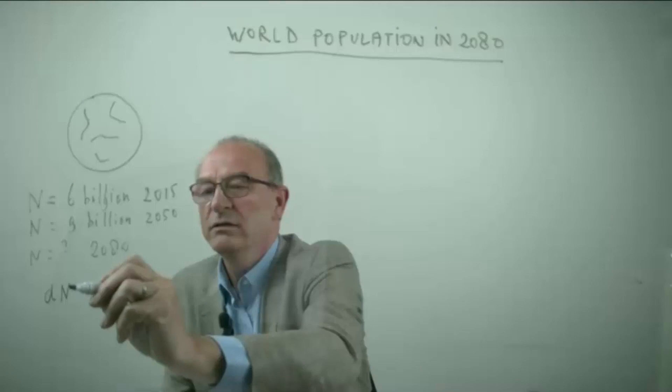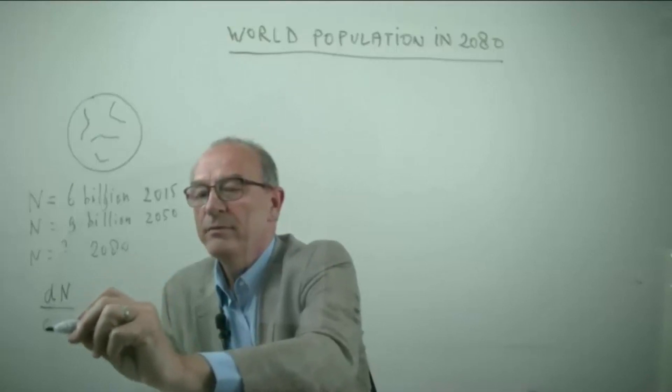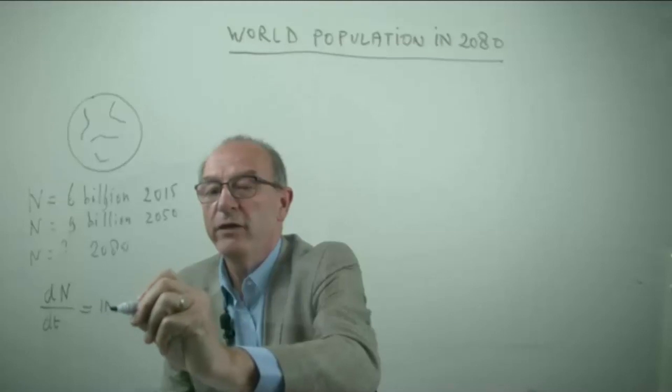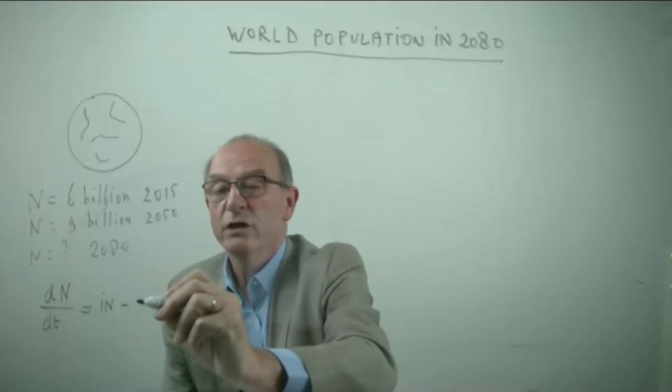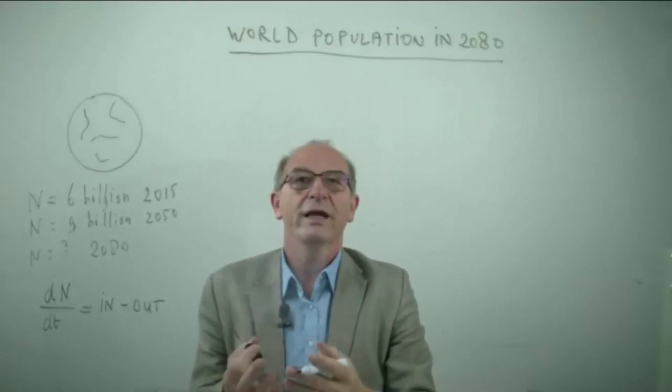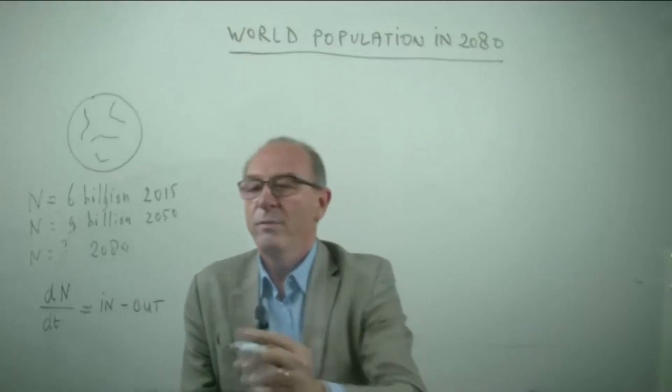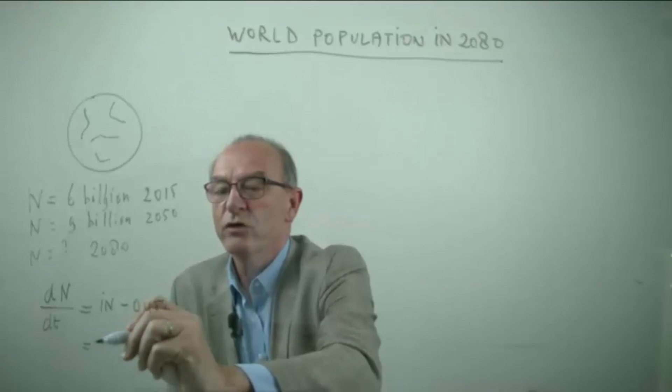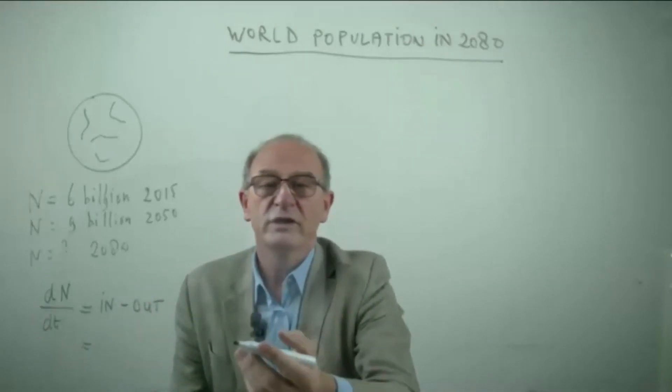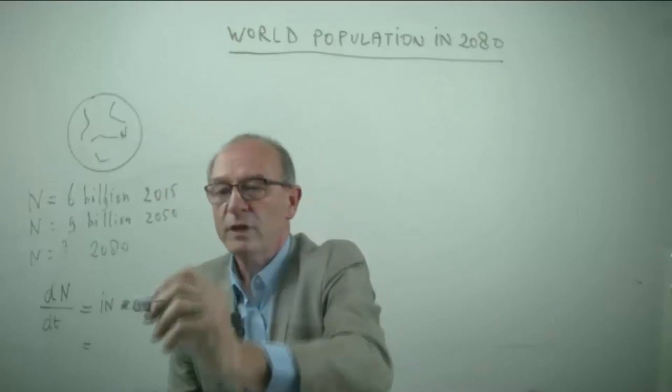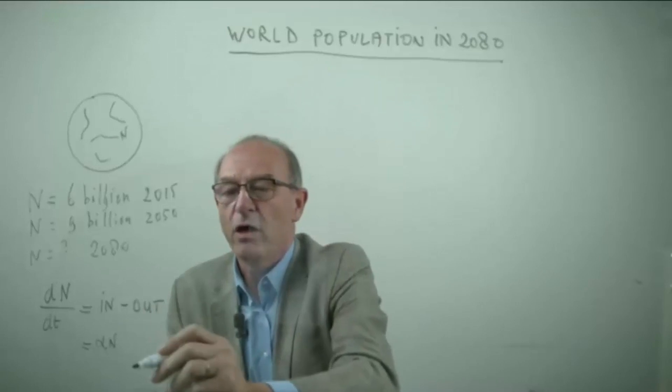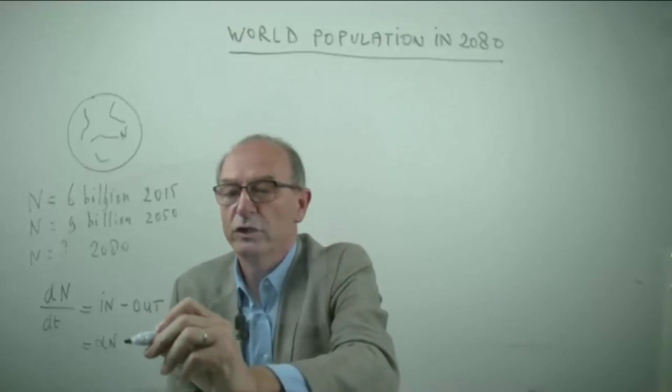The change of our population in time is equal to the amount which are entering our planet and which are leaving our planet. It sounds a little bit strange, entering and leaving, but in fact this is the amount of people which are born on our planet, which are proportional with the amount of people who are living on our planet. So let's say a constant, an alpha multiplied by the total number.